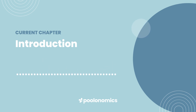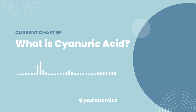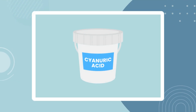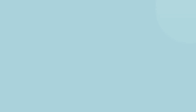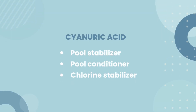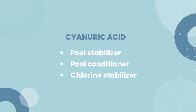Let's start from the top. What is cyanuric acid? Cyanuric acid, often abbreviated to CYA, is a weak acid that helps to protect the free chlorine in your pool from sunlight — it's kind of like sunblock for your sanitiser. If you've ever heard phrases like pool stabiliser, pool conditioner, or chlorine stabiliser, know that it's all just cyanuric acid.